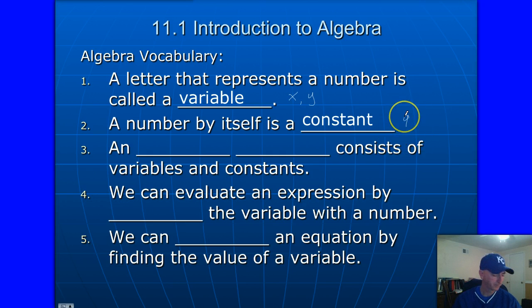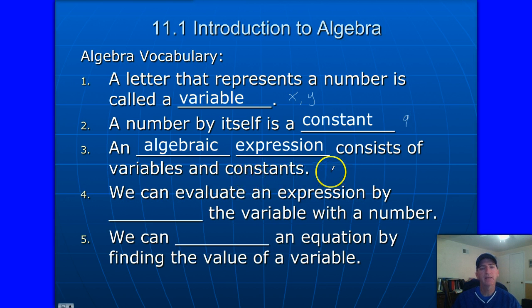That's a constant number, constant value. Number 3, an algebraic expression that consists of variables and constants together. So here's an example of an algebraic expression. Could be any kind of mix such as 3X minus 4. That's an algebraic expression because you've got the constant like 4 and then a variable expression right there of 3X together as one. So algebraic expression.